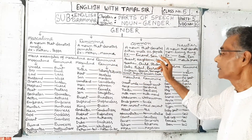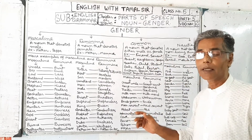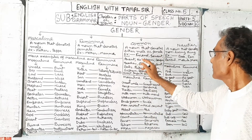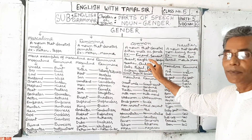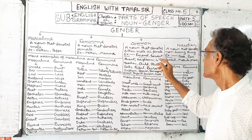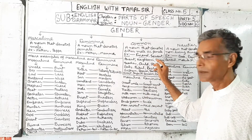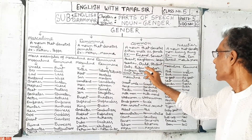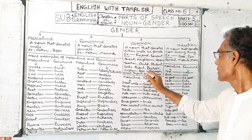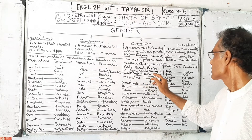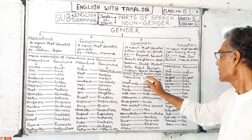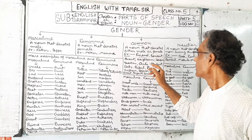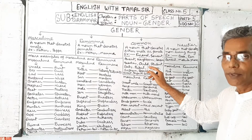Common gender means a noun that denotes either male or female. For example, the word 'friend' — does it need to be male or female? Common gender words include: servant, parent, neighbor, cousin, teacher, child, student, baby, people, person, orphan, spouse, teenager, guest, infant, driver, cook. These are common gender nouns — they can be either male or female.